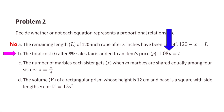Part B: the total cost, T, after 8% sales tax is added to an item's price, P. The equation is 1.08 times the price equals T. Since we're multiplying 1.08 times P, that tells me that it will be a proportional relationship.